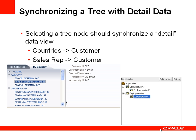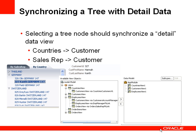You might consider this a master-detail style data model where you have countries and the customers for that country, or employees and the customers for that employee. But there's actually a better way to do this. Instead, the data model has top-level view object instances of countries, customers and employees, where the countries view and the employees view have accessors that allow those view objects to see the customers for that particular view.